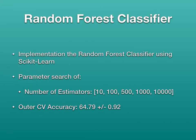For the random forest classifier, implemented again through scikit-learn, the parameter I used was number of estimators: ten, one hundred, five hundred, one thousand, and ten thousand. From this, I got an outer cross-validation accuracy of 64.7% plus or minus 0.92%.